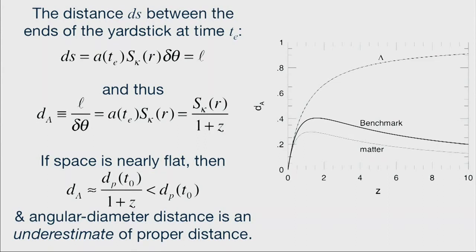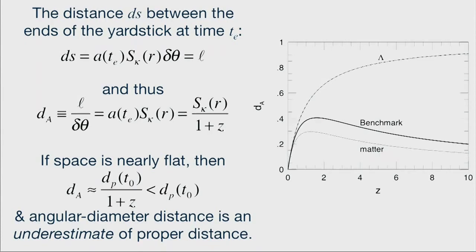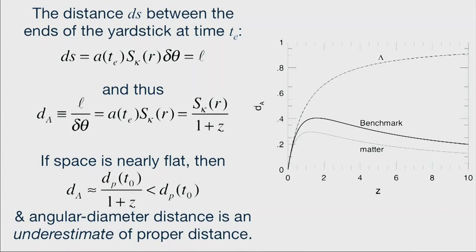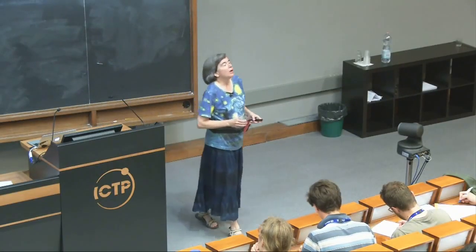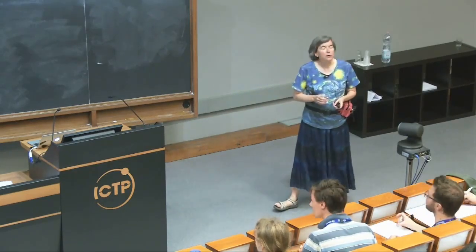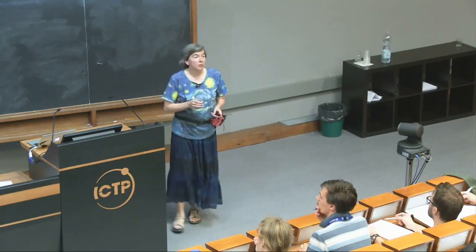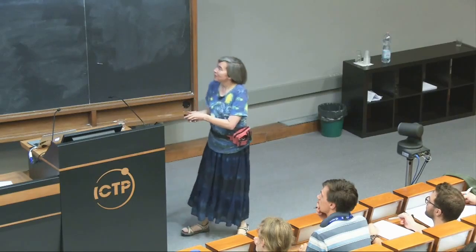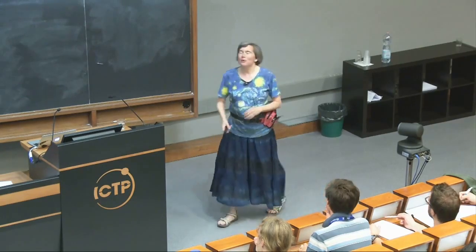Since z is greater than one in an expanding universe, the angular diameter distance you compute for a standard yardstick in flat space is always an underestimate of the proper distance — whereas the luminosity distance from a standard candle is always an overestimate — but it's an underestimate or overestimate that you know, because you know the redshift z. The proper distance is something you can compute in a space with known omega-matter and omega-lambda.